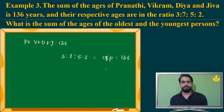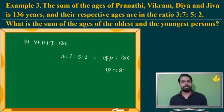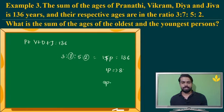So 1 part is actually 8. The oldest person has 7 parts and the youngest has 2 parts, totalling 9 parts. The answer is 9 into 8, which is 72 years.